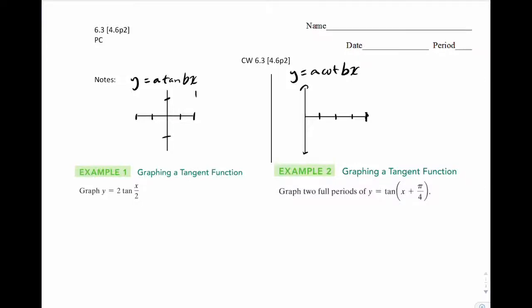Today we're covering classwork 6.3 or 4.6 part 2 in the book. We're going to start right here at this tan equation. Think of this as a basic tan formula. There is a b there, but for this example we're going to assume b equals 1 for this graph.